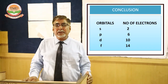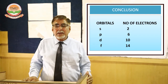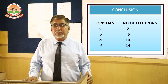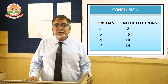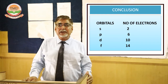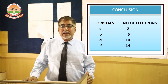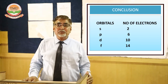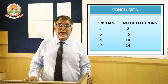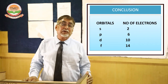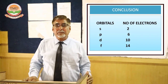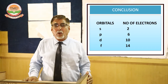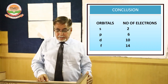For example, sodium is written as 1s² 2s² 2p⁶ 3s¹. The number 3 indicates it belongs to the third period, and s¹ indicates it belongs to Group 1. Electronic configuration is therefore very important to understand.